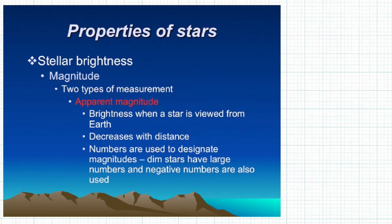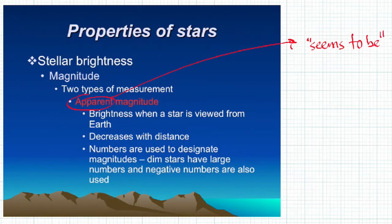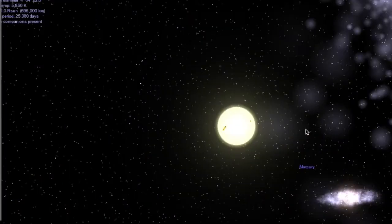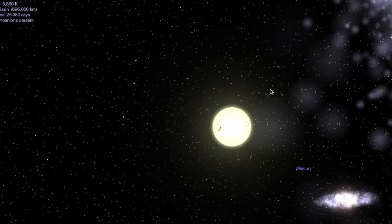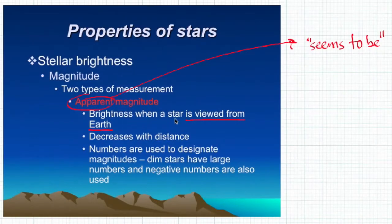The first is called the apparent magnitude. 'Apparent' means 'seems to be.' The apparent magnitude, or apparent brightness, means how bright it appears to us as viewed from Earth. Because we live on Earth, we look up at the nighttime sky and see stars with different brightnesses. Maybe they are that bright, maybe they aren't — it could be simply a function of how far away they are. Stars viewed from Earth give us the apparent magnitude.